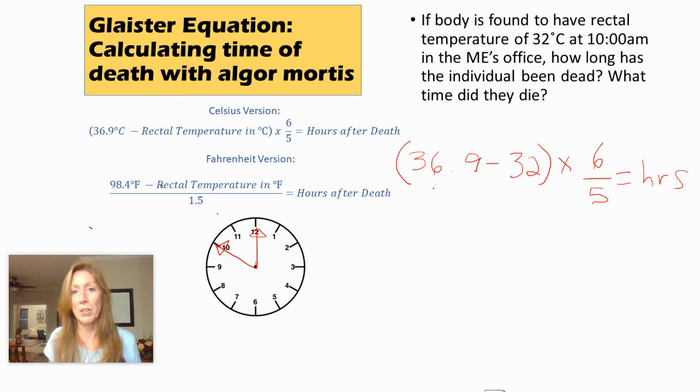Alright, so you're going to go ahead and plug this into a calculator. 36.9 minus 32 is 4.9, and then take that times 6 over 5.